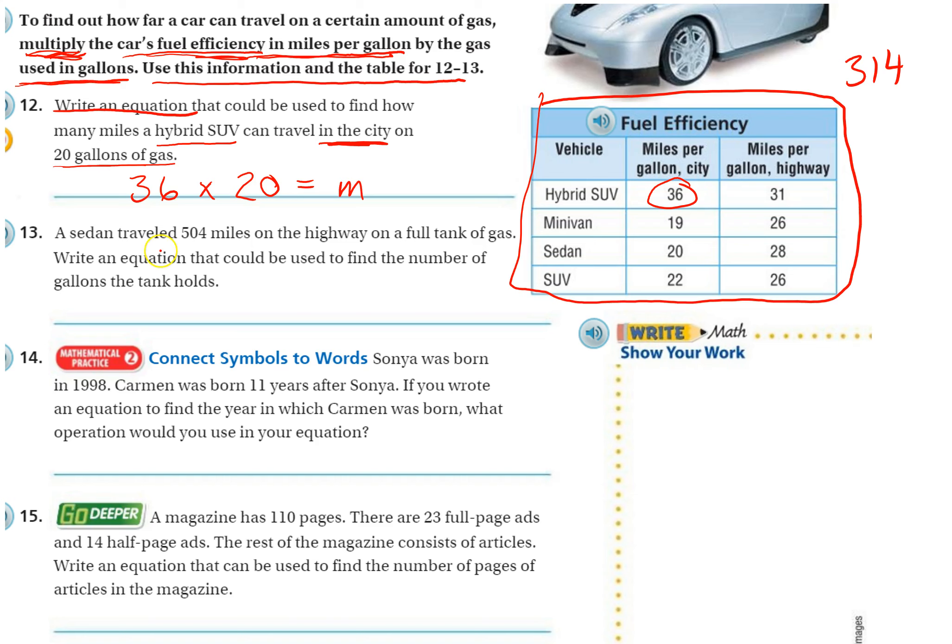Number 13. A sedan traveled 504 miles on the highway on a full tank of gas. Write an equation that could be used to find the number of gallons the tank holds. So we're dealing with highway, a sedan. So we go to sedan, highway, 28. And we know the miles traveled is 504.